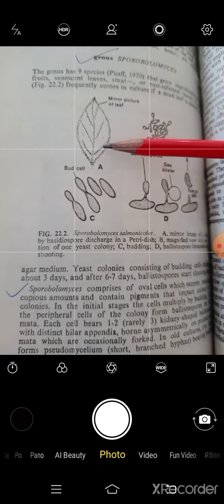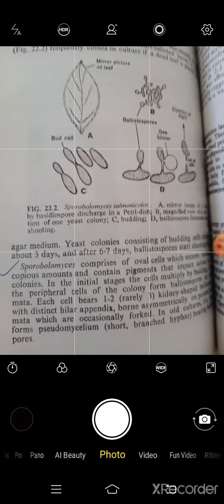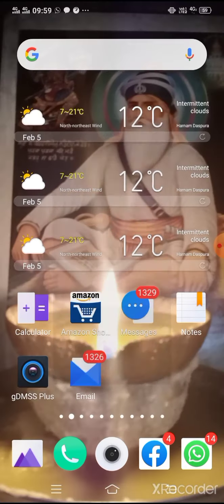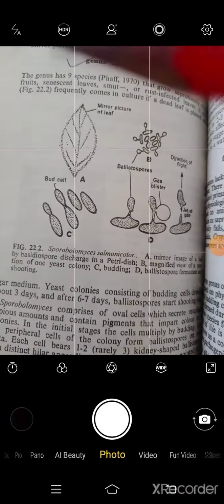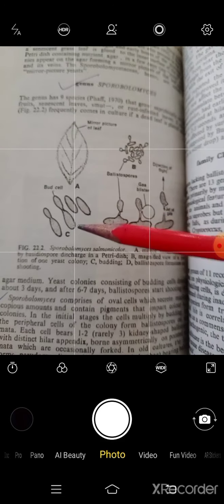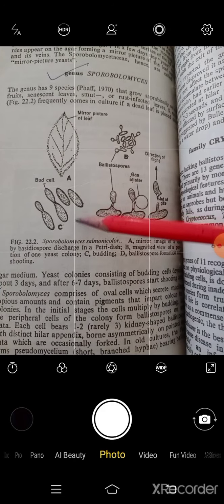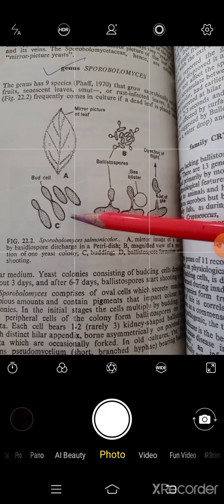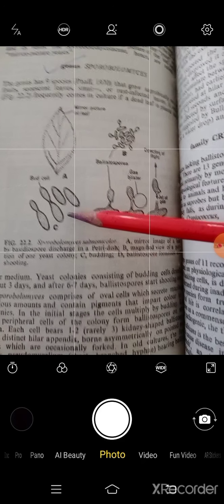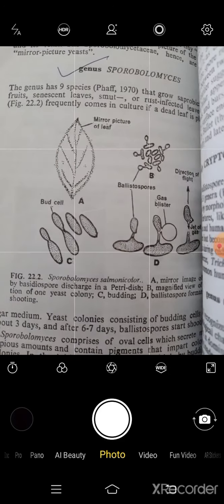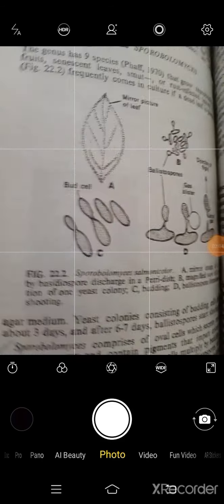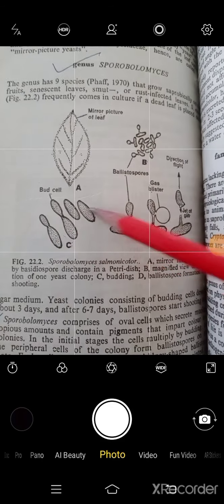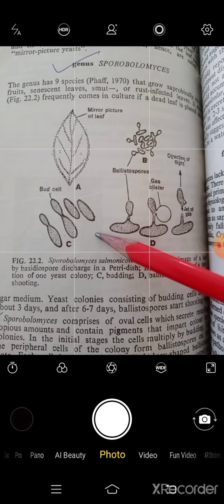So this is how we can culture sporobolomyces. They are also called as yeast. And moreover, they divide as a yeast. Like yeast, how does it divide? With the help of bud cells. They also divide by the bud cells.